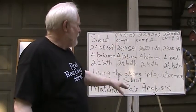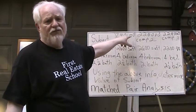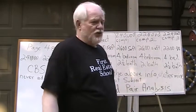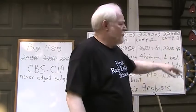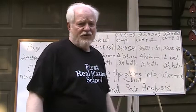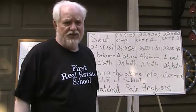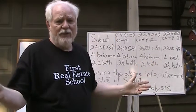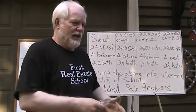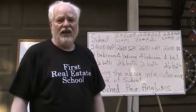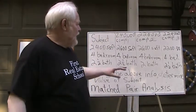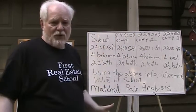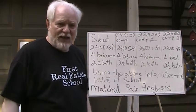In this case, we've got comparable number one that sold for $240,000 recently. We've got comparable number two that sold for $220,000, and comparable number three that sold for $224,000. These are facts — historical facts that they sold for that. We know there was a ready, willing, and able buyer willing to pay that, and a ready, willing, and able seller willing to sell it for that price. It would be nice if we could find three comps that had the exact same features as the subject property, but unfortunately it doesn't happen that way in real life.